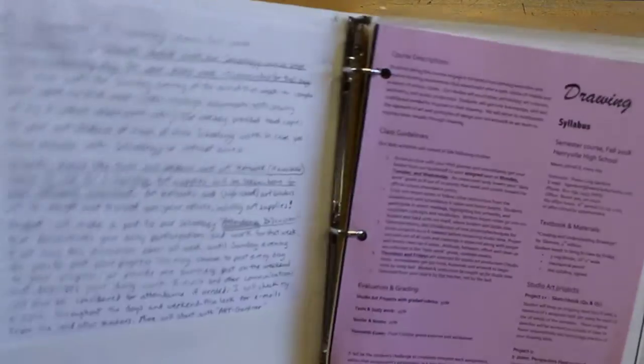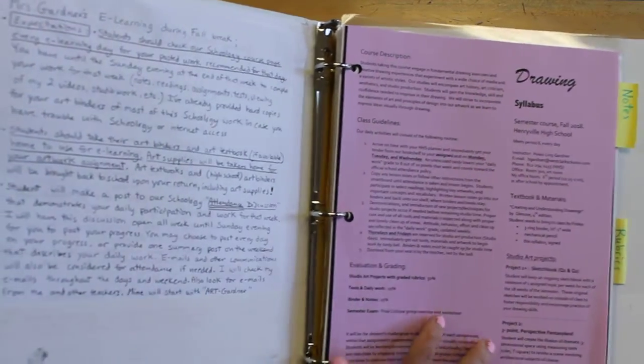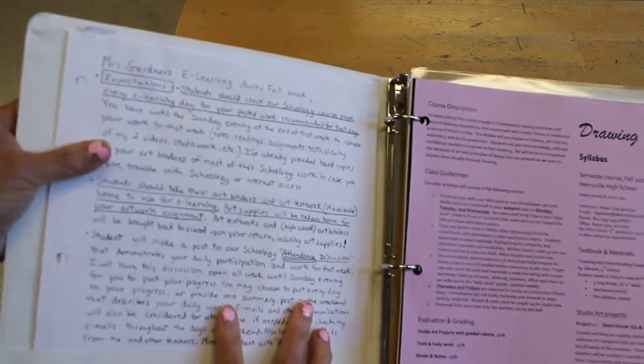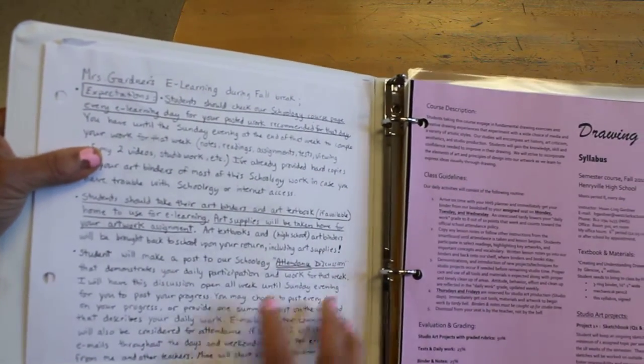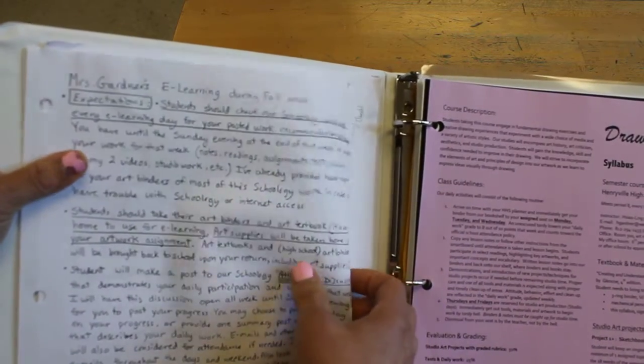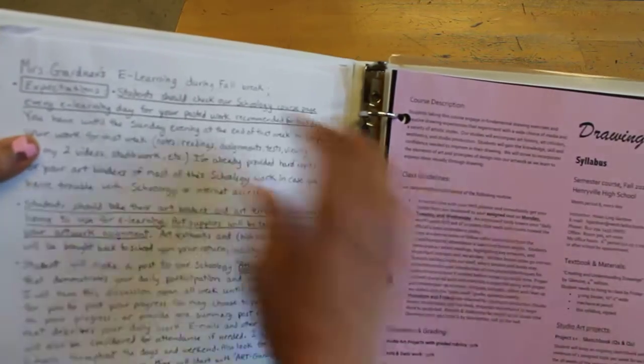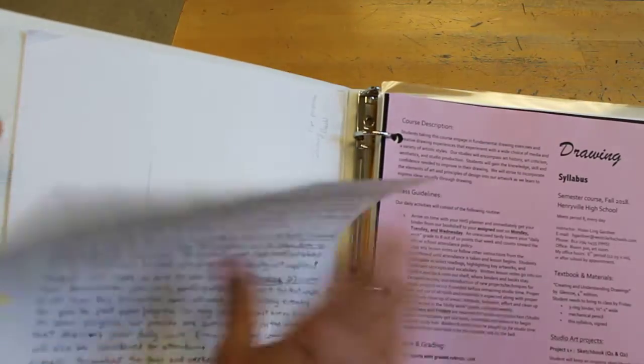Okay so when we open it up first thing you should see right here will be your syllabus. There's a drawing syllabus. And then also I gave you a special sheet that I said put in the front with your syllabus either on it or right here is even better. It's Mrs. Garner's e-learning during fall break paper that has our schedule and everything on the back. So have that.